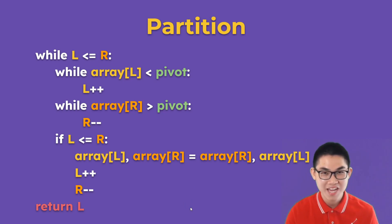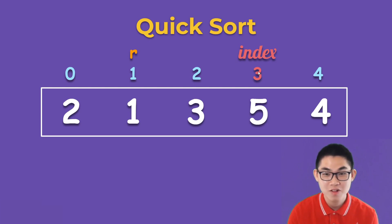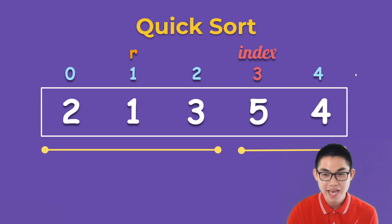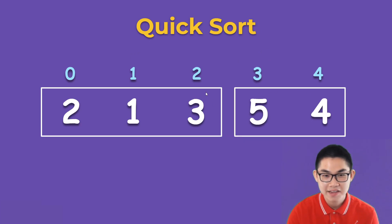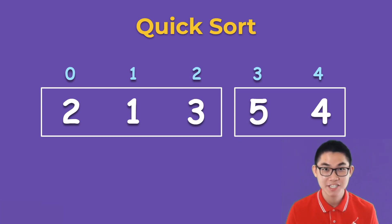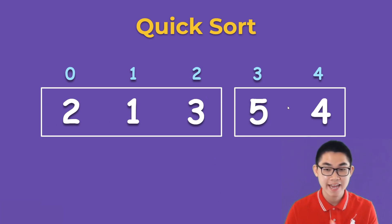L was here before — we replace L with a different variable called index. We want to partition the array, so from the index to the end of the array will be in its own box, and the other side will also be in its own box. Quicksort is recursive in nature, so we repeat quicksort on the left side first and then on the right side.